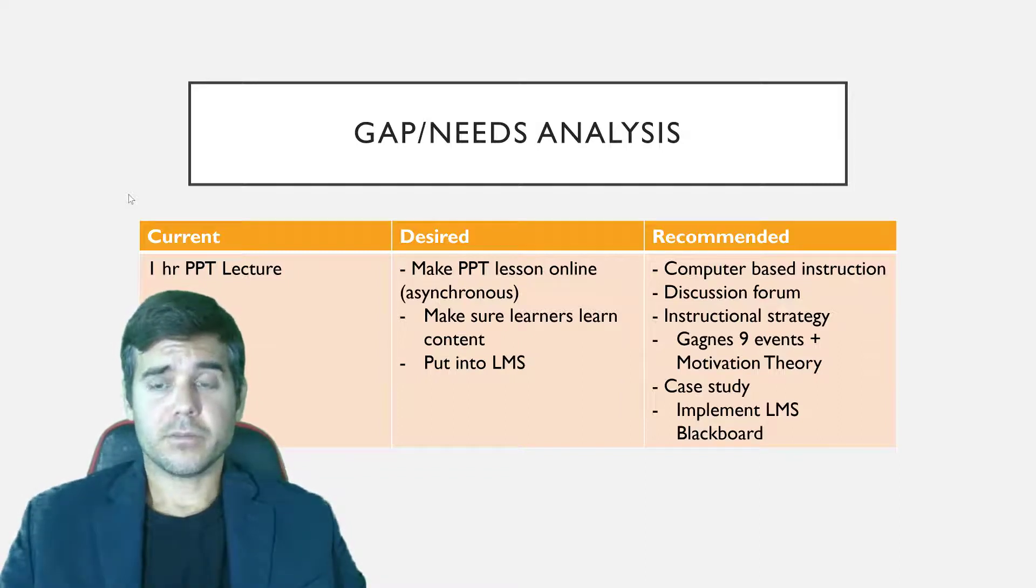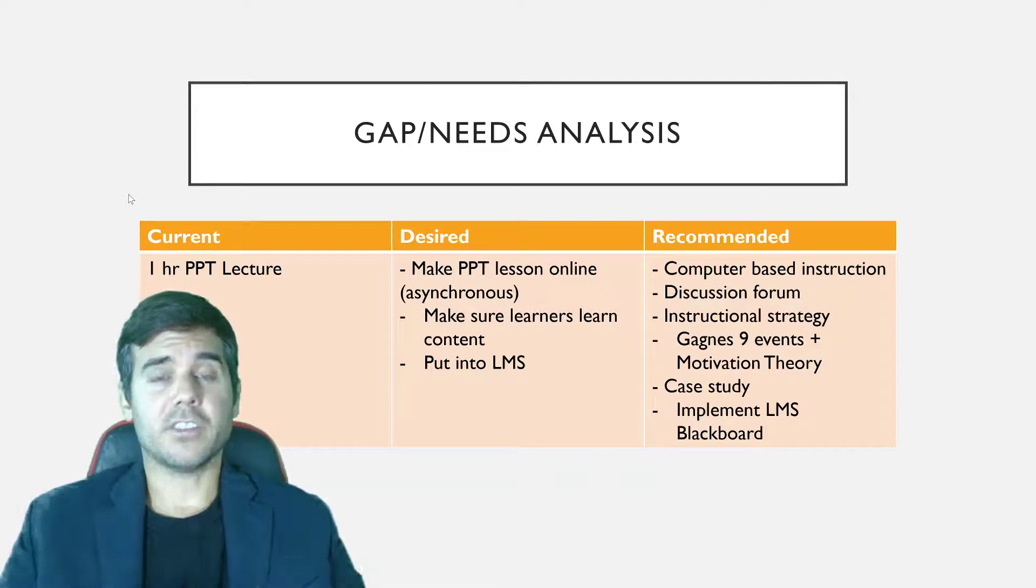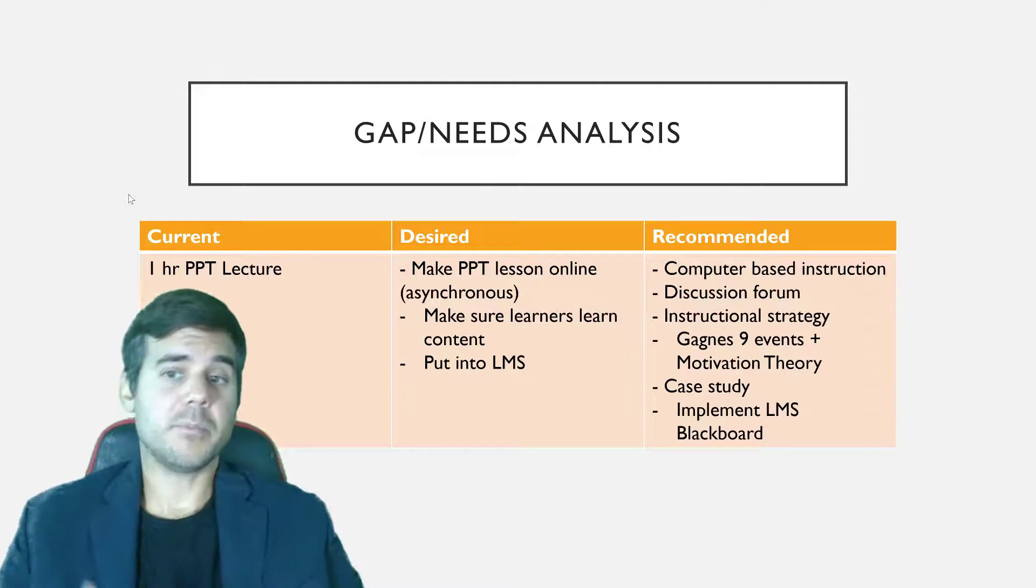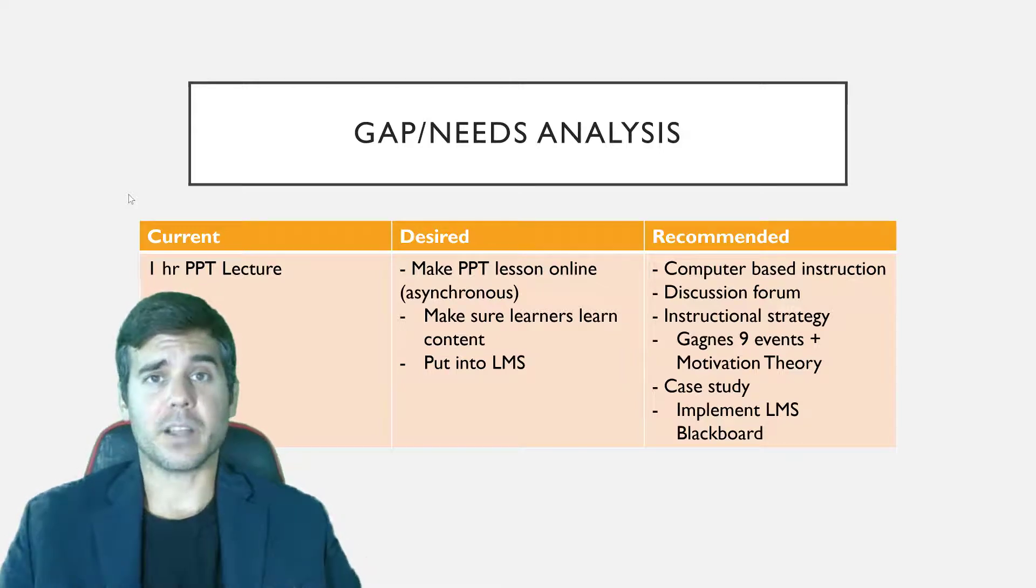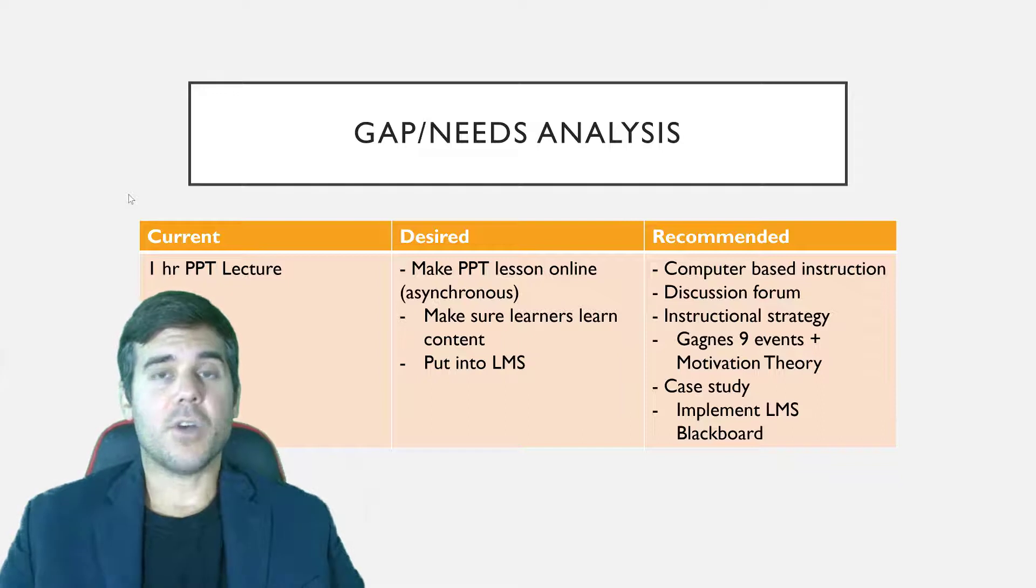So the recommended solution would be, we can develop this in computer-based instruction. We may have some kind of discussion forum or some kind of discussion around it, some online asynchronous discussion. We're going to use some instructional strategies to develop this, some motivational theory. We may put a case study or two in this, and we're going to implement it into the LMS that they're considering purchasing, which is Blackboard. So the gap analysis is we take all of what they currently have, what they desire, and what is recommended. Now this is a very simple example of it, because they may have 10 things that they currently have and what they desire. And there may even be another column in this, rather than current, desired, and recommended. It may be current, desired, recommended, or what's possible versus, because sometimes that desired versus recommended are two different things. So there may be a few options in the recommended. You can play with that table a little bit based on your client and the situation.